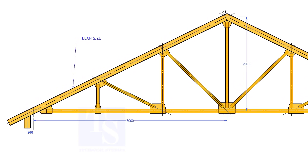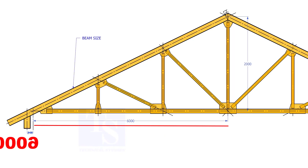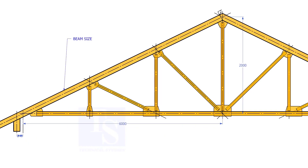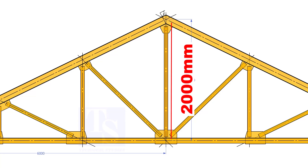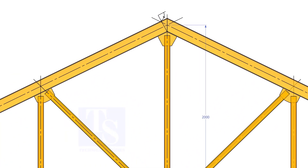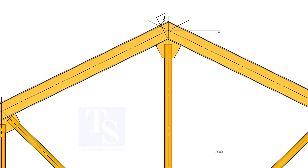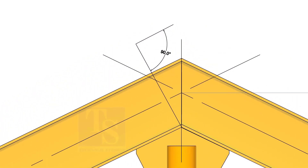Assume that the half span of a truss is 6,000 mm and the height of the truss is 2,000 mm. How to calculate the cutback of a 400 mm wide girder?